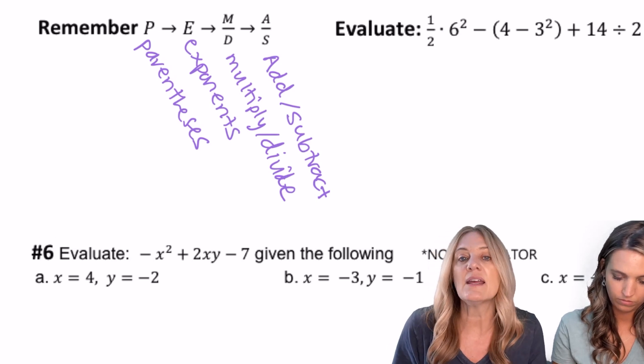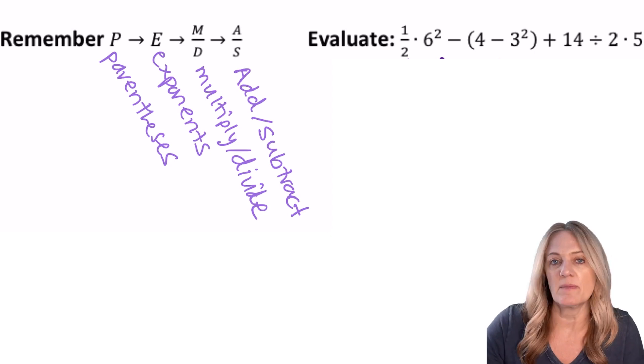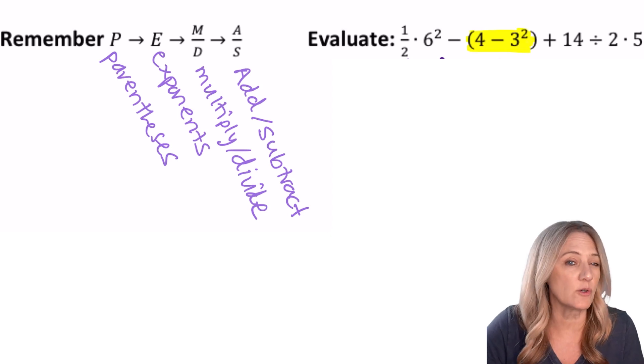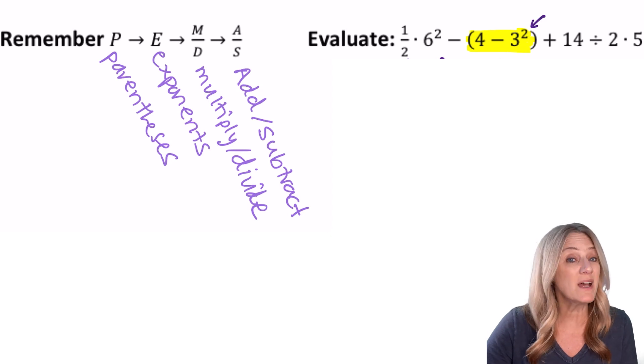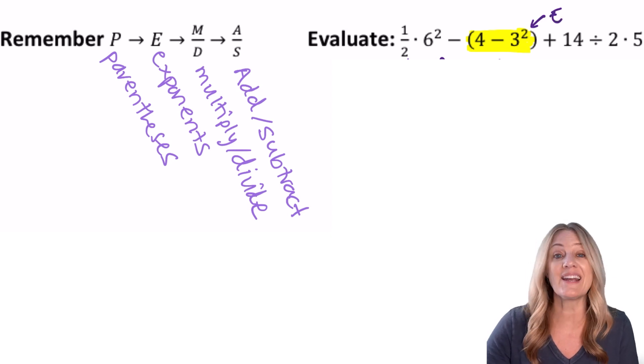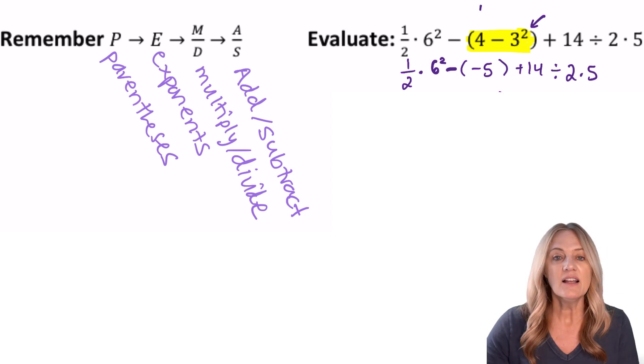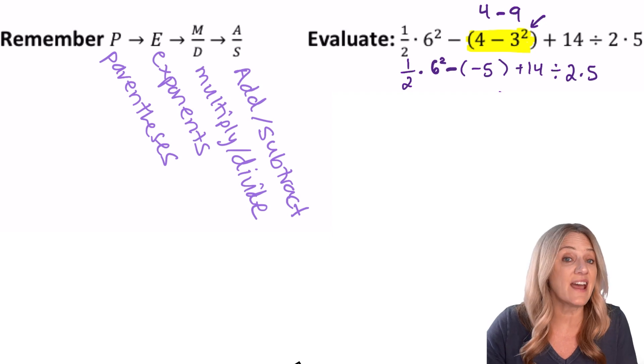First, we look for parentheses or any grouping symbol, and we see that we do have a set of parentheses: (4 − 3²). Inside the parentheses or grouping symbols, we also have to follow order of operations, so we must do the exponent first. So then I have 4 − 9, which is negative 5. Now let's look for any other part of this problem that has an exponent. Well, 6². 6² is 36.